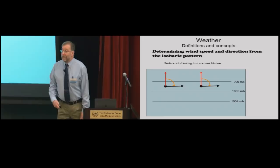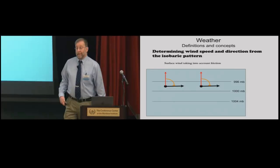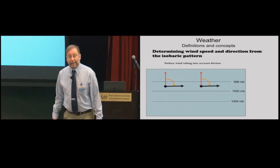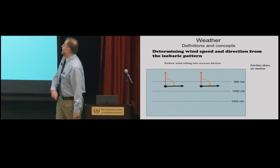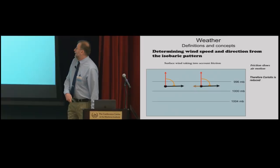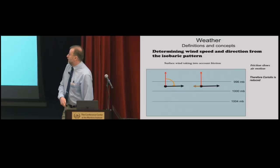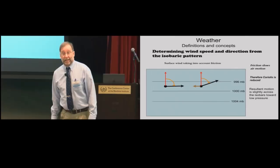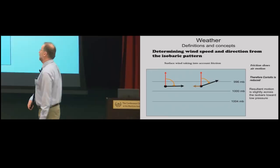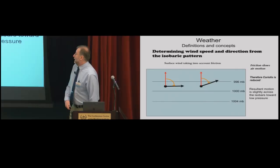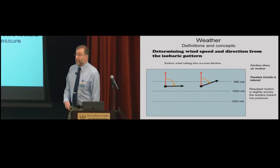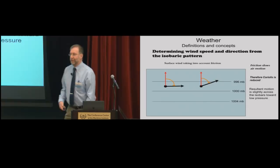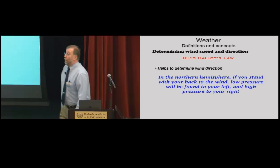If we introduce friction, it acts in opposition to motion and slows it down. The pressure gradient force is defined by the isobars and isn't affected, but the Coriolis effect with slower motion will be less. So we end up with flow that crosses the isobars at an angle toward lower pressure — roughly 30 degrees, though it varies quite a bit depending on the nature of the surface. If we know what the isobars look like, we can estimate wind direction and speed with reasonable accuracy, though some turbulence is involved.